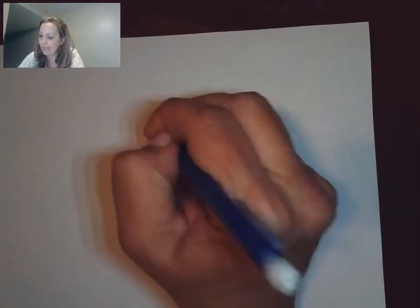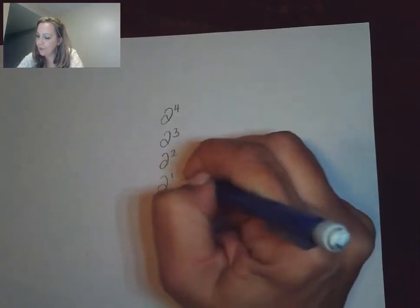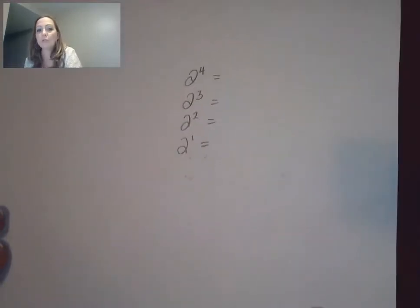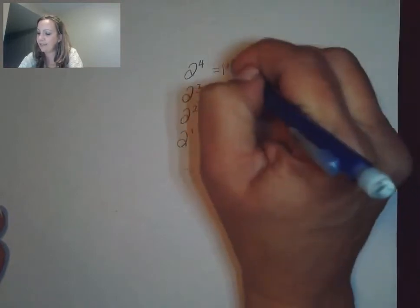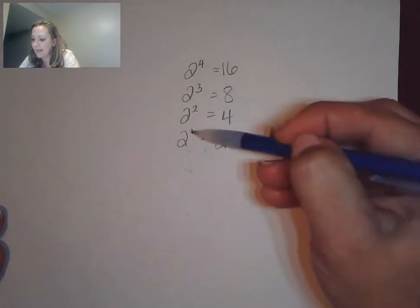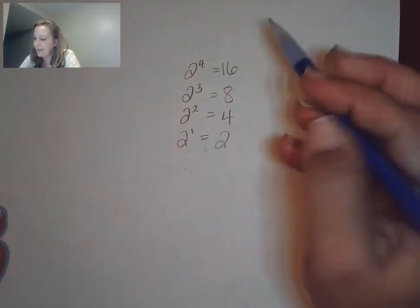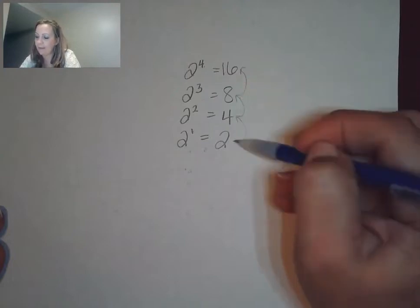If you had something like — let's look at 2 to the first, 2 to the second, 2 cubed, 2 to the fourth, et cetera. These are powers that are easy to evaluate: 2 to the first is 2, 2 squared is 4, 2 cubed is 8, 2 to the fourth is 16. Let's look at the pattern — we were increasing the exponent by 1 each time, and the pattern is that we would be multiplying by 2.